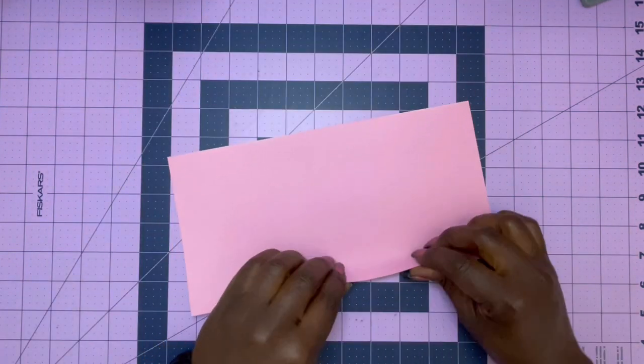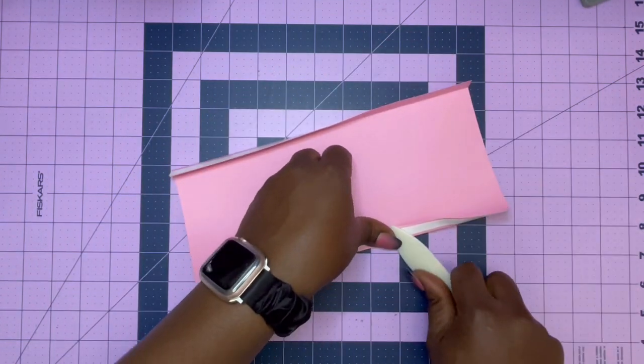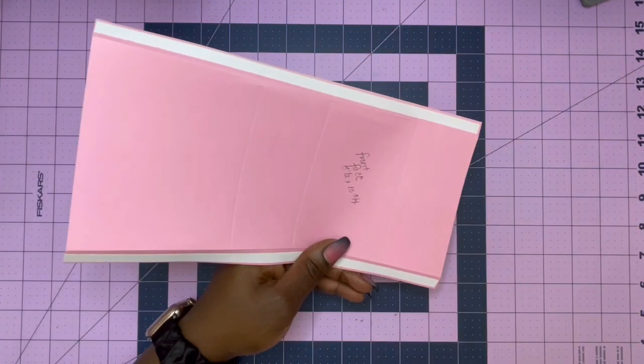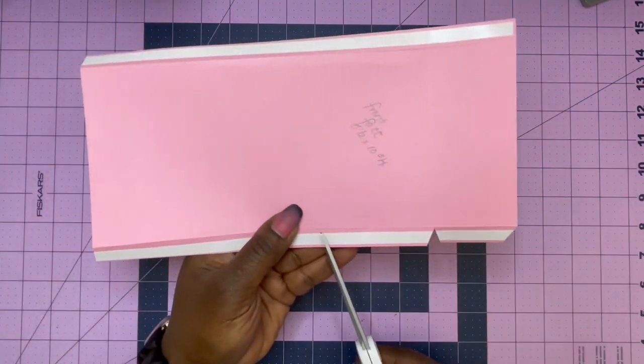Next, we're going to work on our front face and fold on our score lines. We are going to cut little notches in between all of those score lines up to the joining score line. This is going to help you flex it and be able to attach it to your side panels.